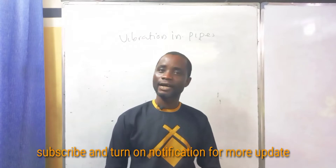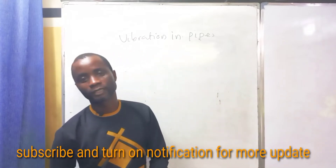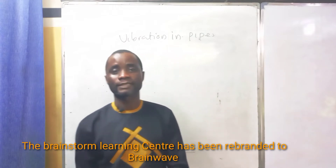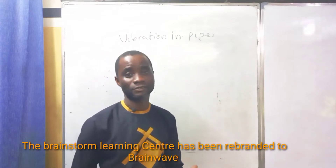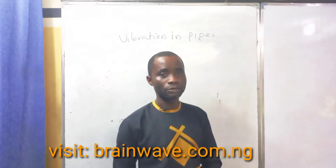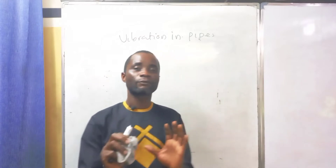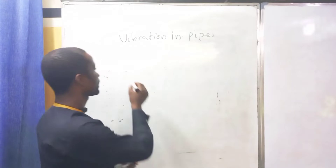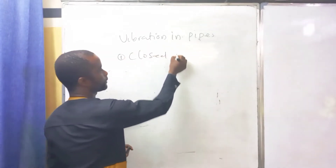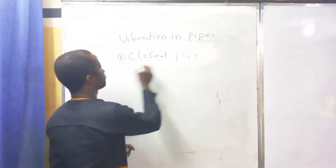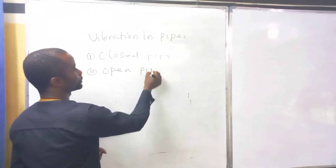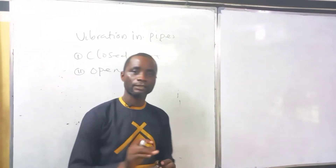Sound is produced when an air column in a pipe is set into vibrations through an external influence or external disturbance. In a pipe, there are two types: we are going to call them open pipe and closed pipe, and we are going to look at them one after the other. We are going to start with closed pipe.